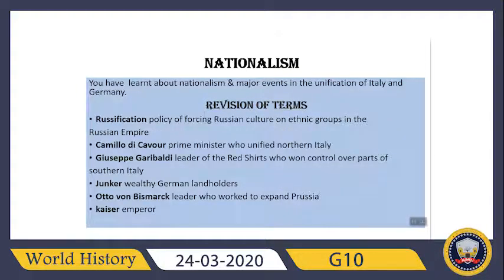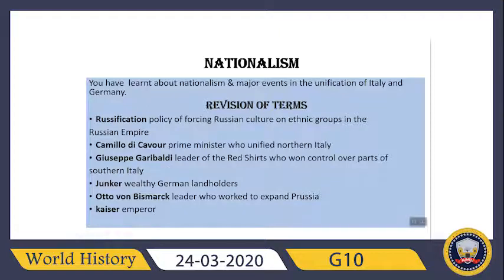The next lesson is 'Nationalism.' In this lesson you learned about nationalism and the major events in the unification of Italy and Germany. A few terms: Russification — a policy of forcing Russian culture on ethnic groups in the Russian Empire. Camillo di Cavour — he was a prime minister who unified northern Italy. Giuseppe Garibaldi — he was a leader of the Red Shirts movement who won control over parts of southern Italy.